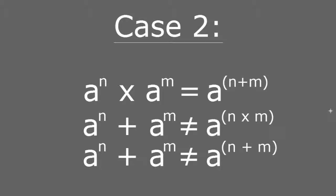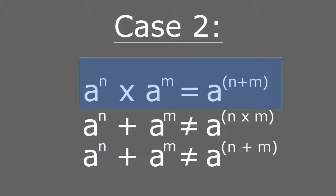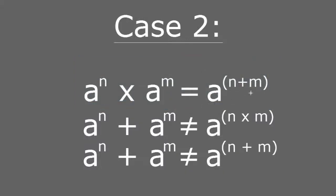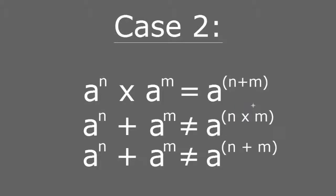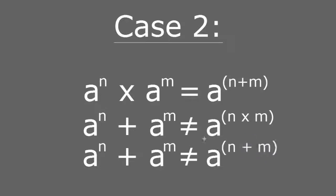Another case of creativity that never paid off was with the other multiplication property of exponents. When you're multiplying numbers with the same base number and different exponents, that equals the same base number raised to the addition of those exponents — a raised to the power of n plus m. Now if you're performing addition, you cannot go and have the same base number and then multiply the exponents.